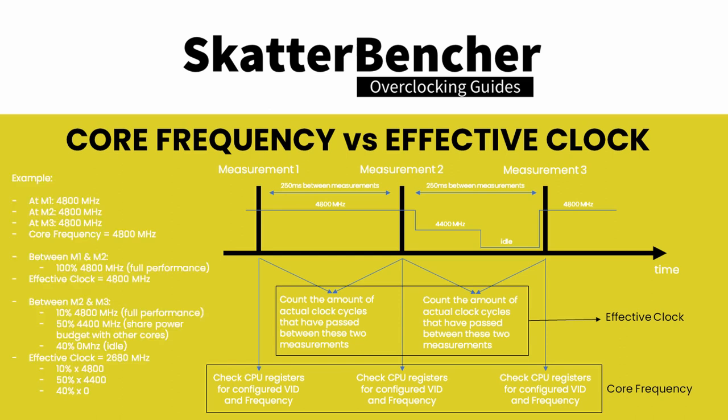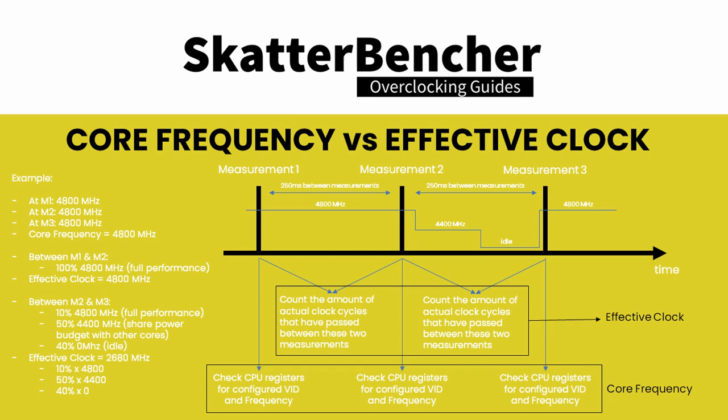These two measurements can differ a lot because modern CPUs like Ryzen 5000 have very advanced power saving features. When a CPU core has nothing to execute, it will quickly go to a low power state. This is great because that opens up more power budget for any of the other cores that do need to execute. So those other cores may boost to a higher frequency.